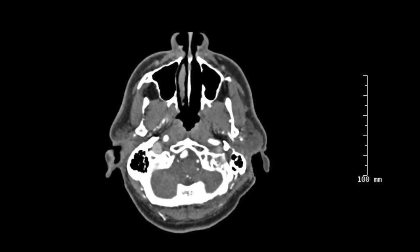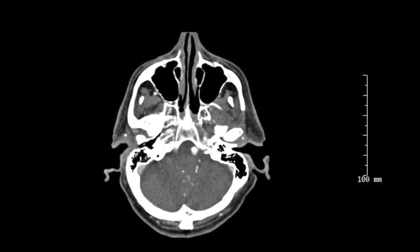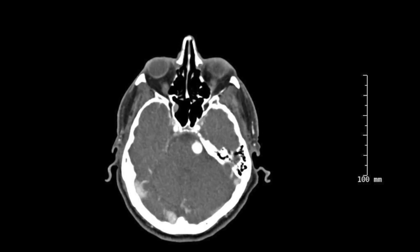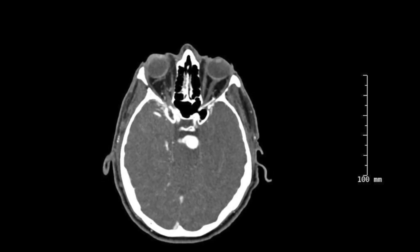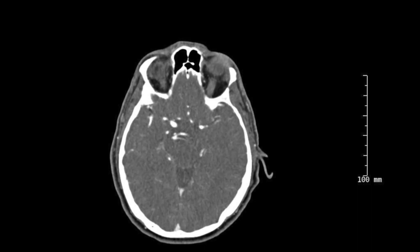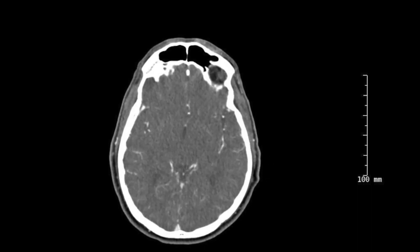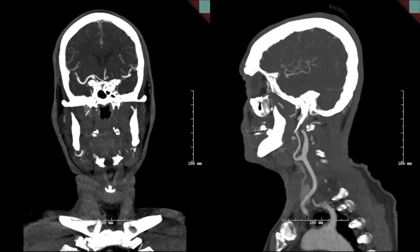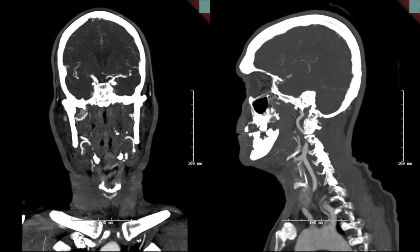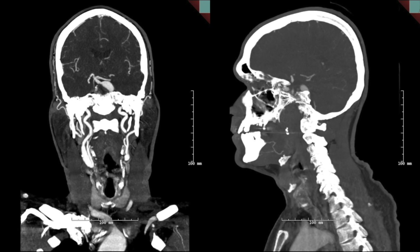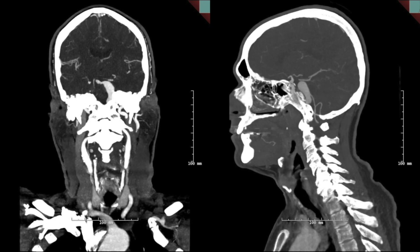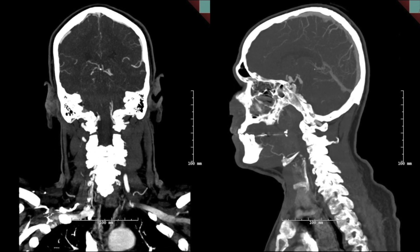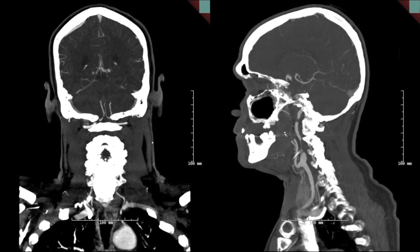On source image, CT angiography was remarkable for mid-basilar fusiform dilatation, which demonstrated some mass effect, as well as evidence of a mid-intraluminal thrombus. The remainder of the intracranial circulation was intact without evidence for large vessel occlusion. CT angiography of the neck on sagittal and coronal views demonstrated a dominant right vertebral artery and also demonstrated the extent of the fusiform dilatation in more clarity of the basilar artery aneurysm.